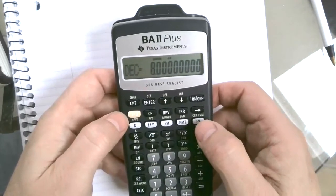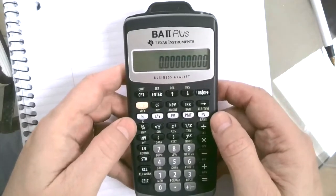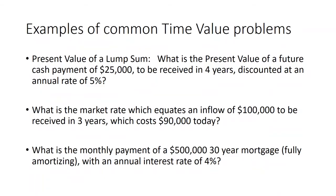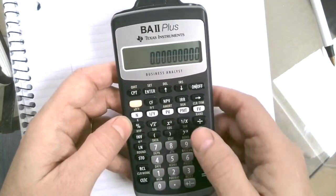Let's say you've got a problem where you want to calculate the present value of a lump sum. What's the present value of a future cash payment of $25,000, and you're going to receive this $25,000 in four years? Your discount rate is 5%. So what are you willing to pay for that today? These white buttons are all your present value functions.